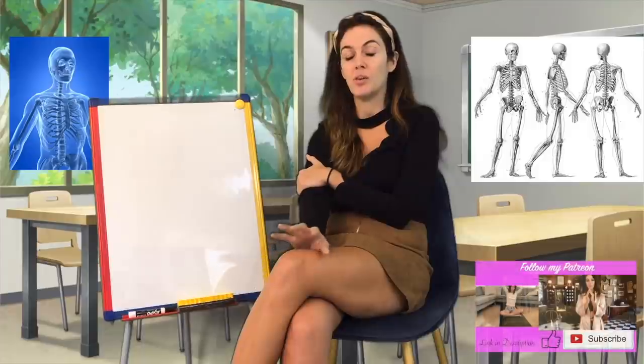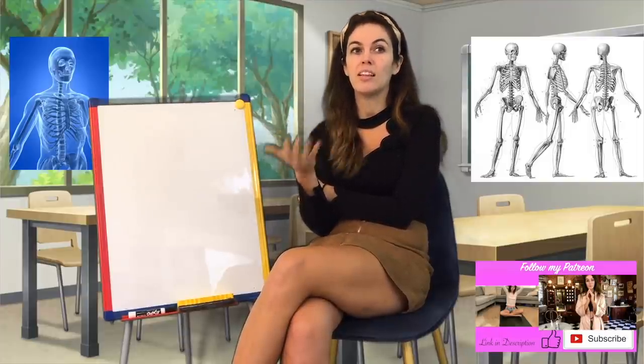A hinge joint is the next type — it allows movement in one direction, like a door. Think of your elbow and your knee; they allow forward and backward movement. Then there's the pivot joint, where a bone rests on top of another bone permitting rotation. Examples are your wrists, ankles, and neck — it allows one bone to rotate around another, such as turning your head.